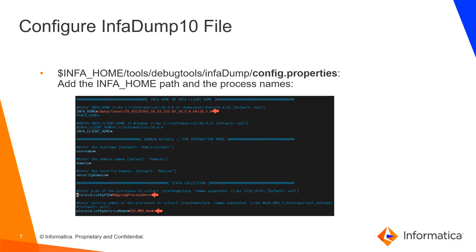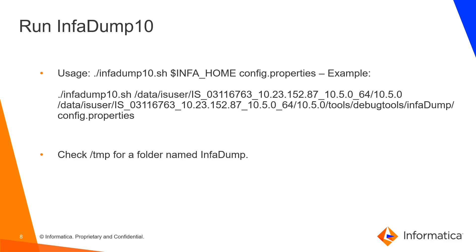For the mapping process, you must open the mapping log for the job that is hanging and collect the process ID. Steps for this will be shown in the demo. Save and then run Infodump as shown here. The output is saved to the temp directory by default.